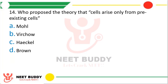Question number fourteen. Who proposed the theory that cells arise from pre-existing cells? The correct answer is option B — Virchow.